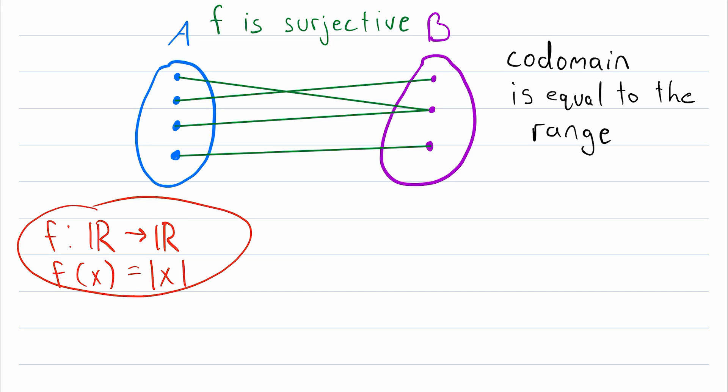Thus this function as it is defined is not a surjection. Because all of the images of this function by its definition are non-negative numbers. But our codomain contains numbers that are negative. So since not every element of the codomain gets mapped to by this function it's not a surjection. The range is not equal to the codomain.